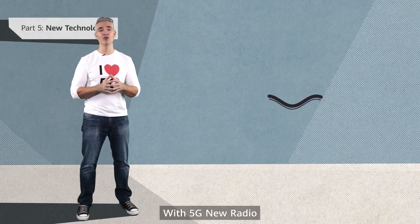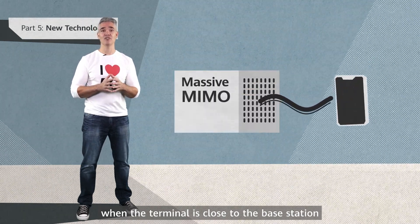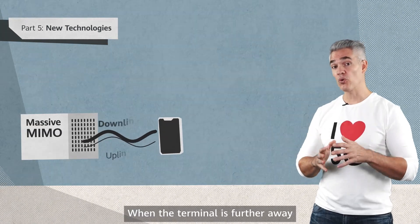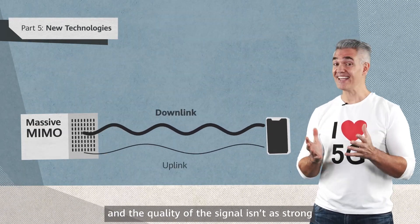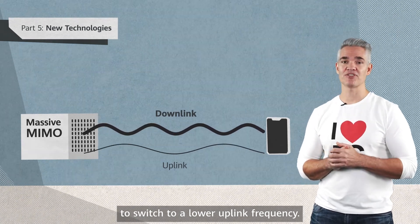With 5G new radio, they're still the same when the terminal is close to the base station and the uplink signal is strong. When the terminal is further away and the quality of the signal isn't as strong, the base station will trigger the terminal to switch to a lower uplink frequency.